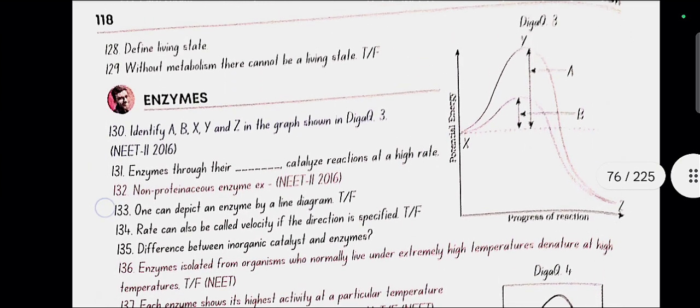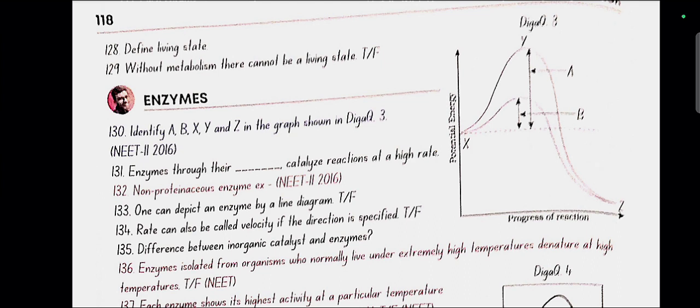Enzymes. Identify A, B, X, and Y in the graph shown in diagram 3. Here in diagram 3, X is substrate, Y is transition state, Z is the product. A is the activation energy without the enzyme and B is activation energy with the enzyme.